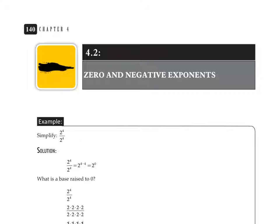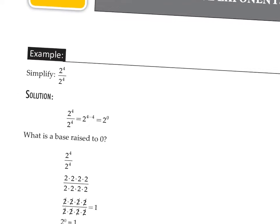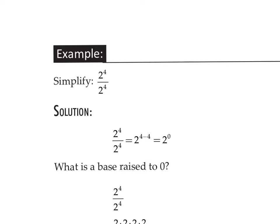In this video, we're going to talk about zero and negative exponents. If we look at this first example, we can see that we have a ratio or a fraction with some exponential expressions in it. On the top of this fraction, the numerator, we have the base of 2 with an exponent of 4, or 2 to the fourth power. And the denominator is also 2 to the fourth power. This translates, if we use the division rule — which is subtract the exponents — into a base of 2 with 4 minus 4 as the exponent, or 2 to the zero power, because 4 minus 4 is zero.